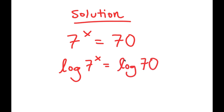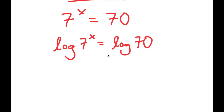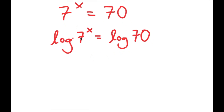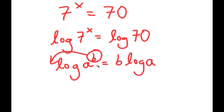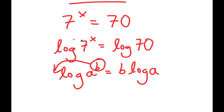The reason you should do this is because you can use the property log of a to the power of b — you can move b to the front to get b times log a. So log(a^b) = b·log(a). This property is so useful because before, x was an exponent and it's really hard to solve for x in that state.